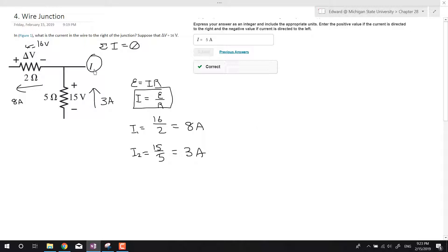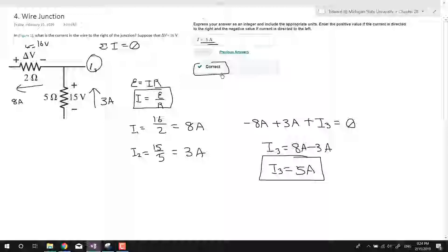So let's call this I3. We've got 8 amps going out, so minus 8 amps, plus 3 amps because it's going in, and then we've got plus an additional I3, and all equals zero. So we move all this to the other side. We've got positive 8 amps minus 3 amps. We'll get I3 is equal to 5 amps. And there we go. The answer's right here, and it's correct. So we're good.